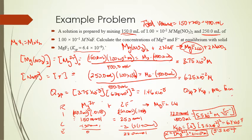When dealing with these problems: first check if precipitation will occur by calculating Q; then do the limiting reactant calculation since ions come from two separate sources; whichever is in excess remains in solution. In this case NaF is completely soluble (alkali metal salt), so excess F⁻ from NaF acts as a common ion, driving the reaction back toward MgF2(s) and lowering the Mg²⁺ concentration.